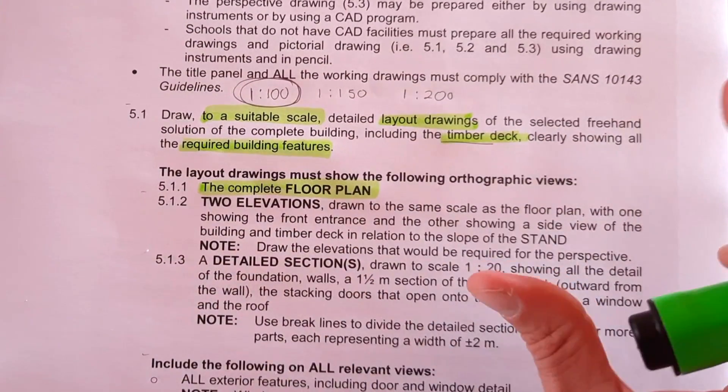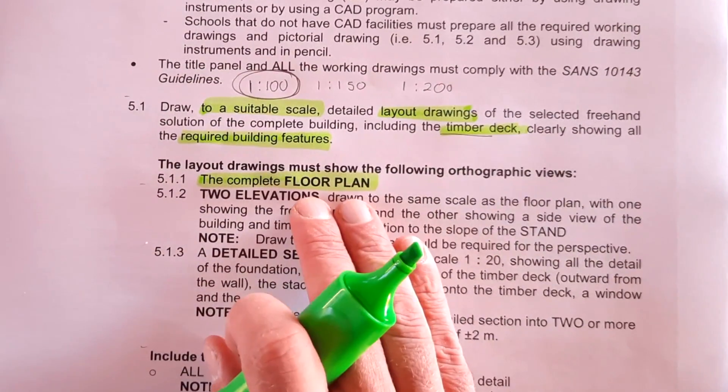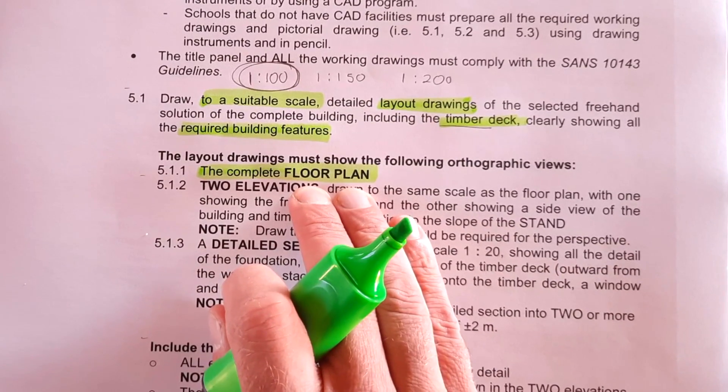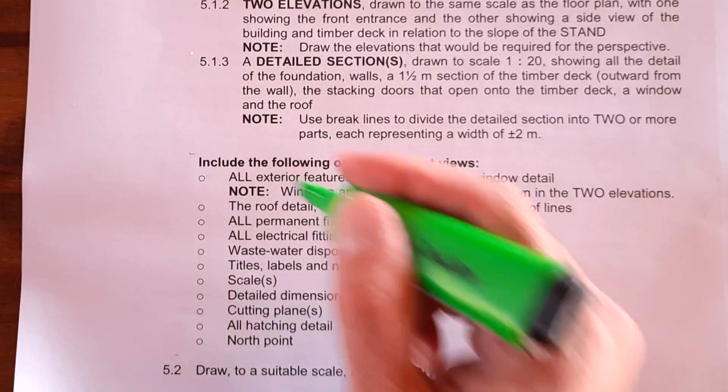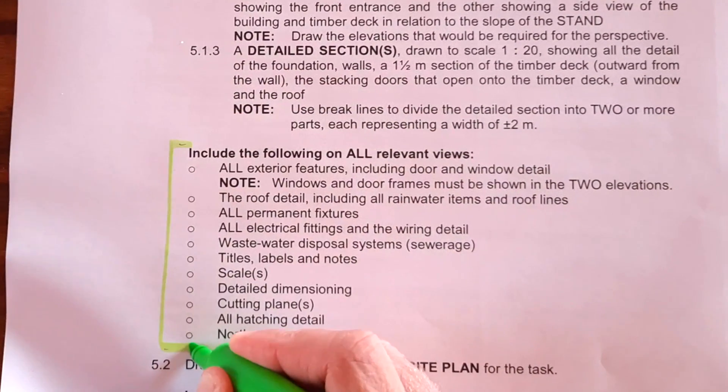In other words, all the measurements, all the different requirements for that floor plan must be indicated on it. My next video will do the elevation sections, etc. But this area is going to be relevant for you. Let's quickly look at that.